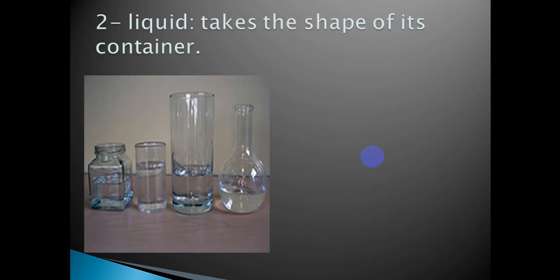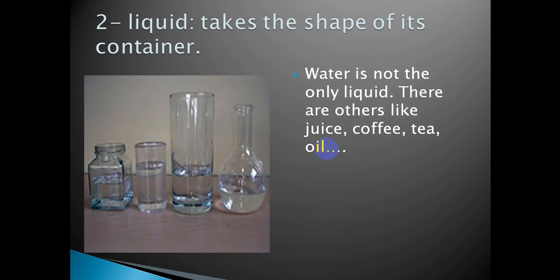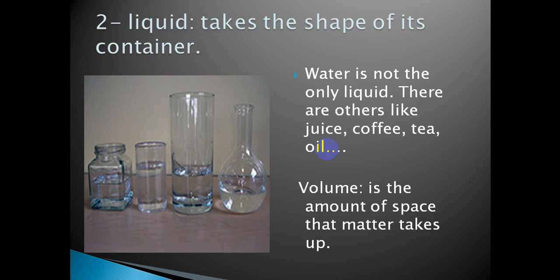The second state of matter is liquid. A liquid doesn't have a shape — it takes the shape of its container. A container is something in which you put the liquid inside, like a glass, a jar, or any other container. So a liquid doesn't have its own shape but takes the shape of its container. Water is not the only liquid; there are others like juice, coffee, tea, oil, Pepsi, and shampoo.